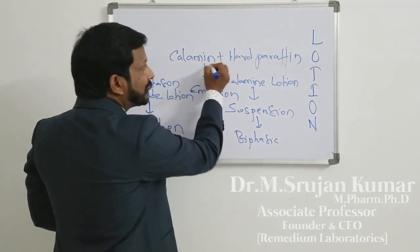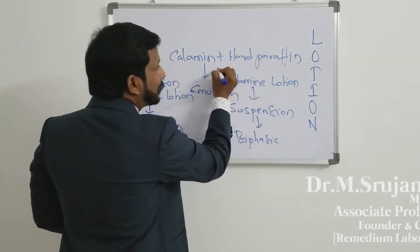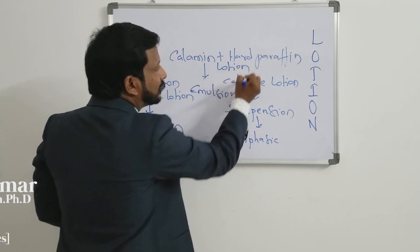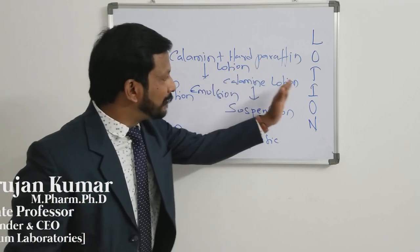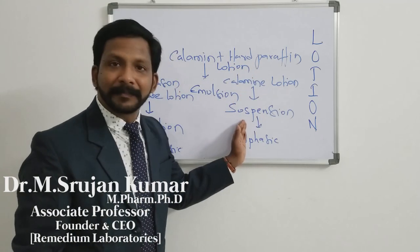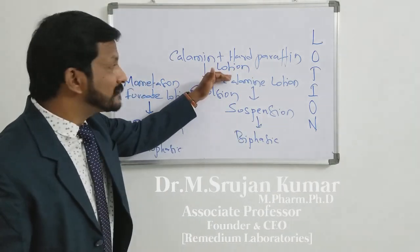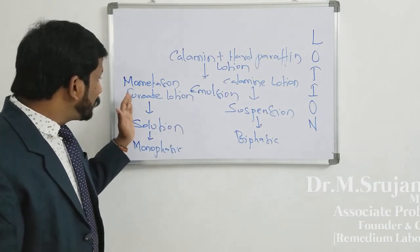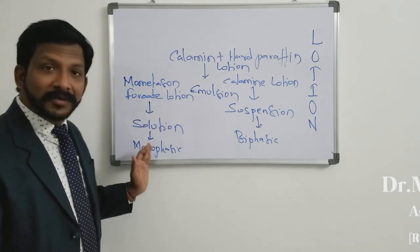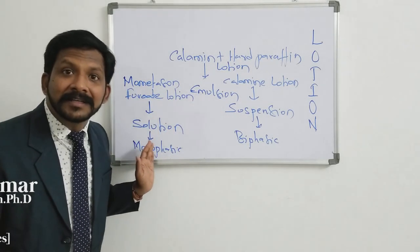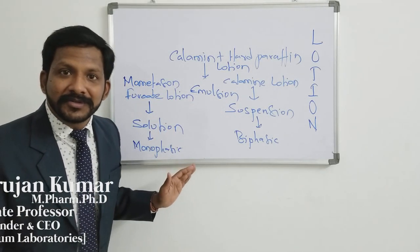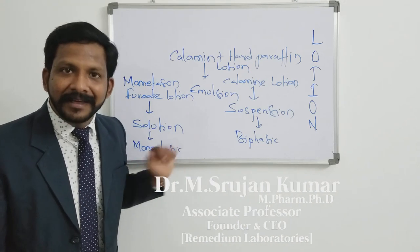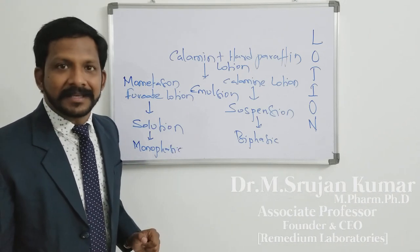So, what are the principles in these lotions? In Calamine Lotion, the principle involved is suspension. In Calamine plus hard paraffin lotion, the principle involved is emulsion. And in emulsion fluid lotion, the principle involved is solution. Therefore, one must be very specific while defining lotions.